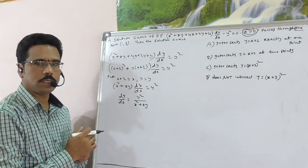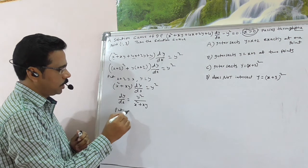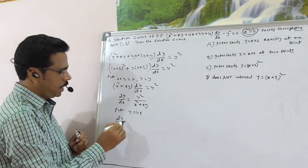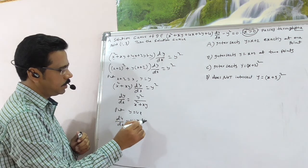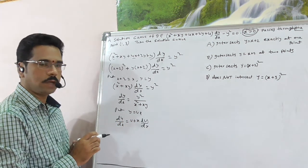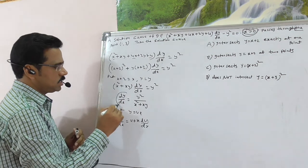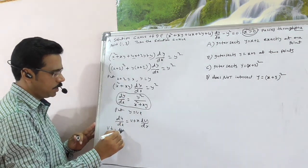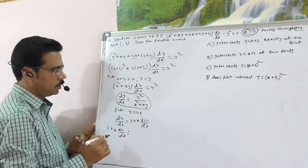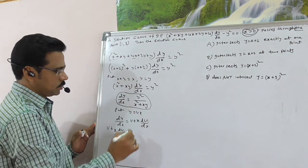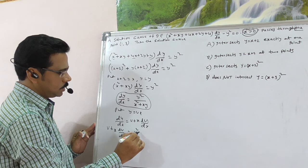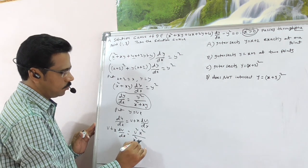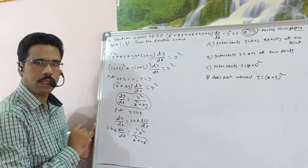Apply standard DE procedures — put y = VX. Then dy/dx = V + X·dV/dX. Substituting y = VX into the equation: V + X·dV/dX = V²X²/(X² + VX²) = V²/(1 + V).